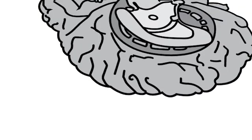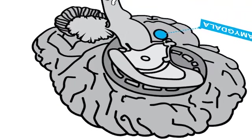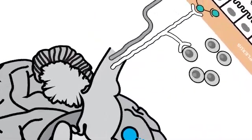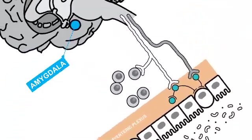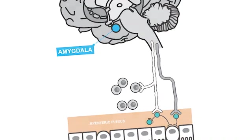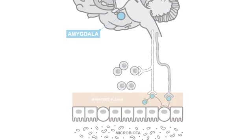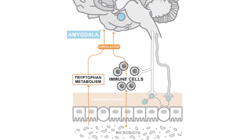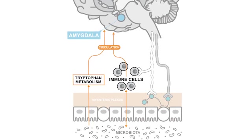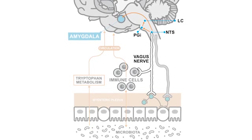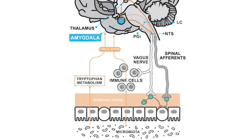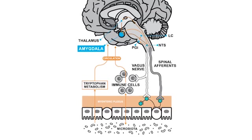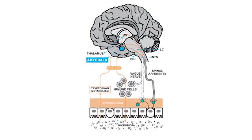We hypothesize that the microbiota communicates with the amygdala through the gut-brain axis. This provides a number of different pathways for the gut microbiota to influence the amygdala. These pathways include the circulation via microbial metabolites and immune cells, the vagus nerve via the immune and enteric nervous systems, and the spinal cord, all of which are discussed in more detail in our review.